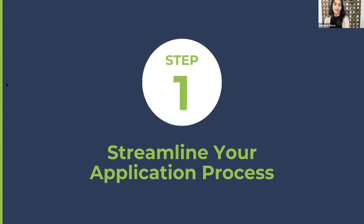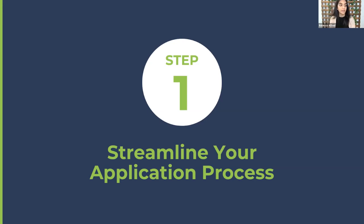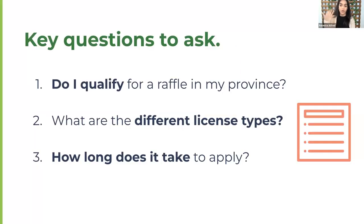Our first step is to set the stage. Let's talk about streamlining your application process. To make your application process a breeze, you need to understand the rules in your area. Each province has its own rules and regulations that you'll have to adhere to. But once you know the rules, you can apply and plan the best raffle for your organization. Questions to ask before getting started: do I qualify for a raffle in my province? What are the different raffle license types and requirements for each?